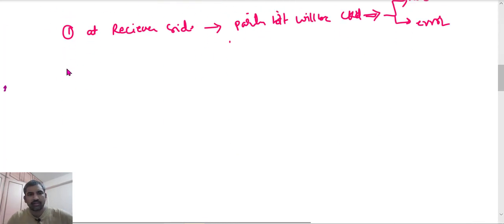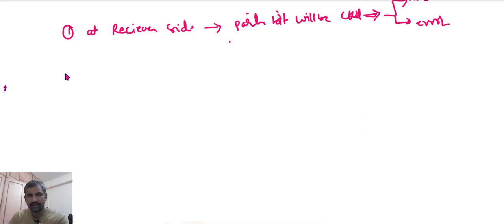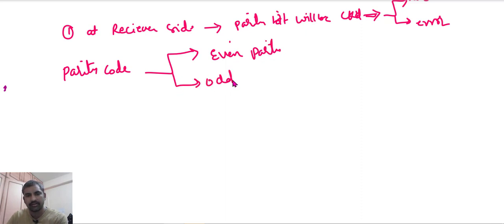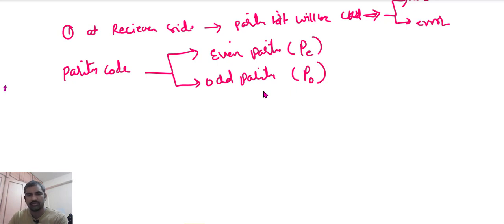In parity code we have two types: even parity code (PE) and odd parity code (PO).